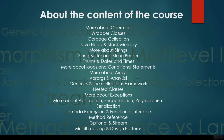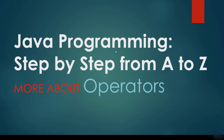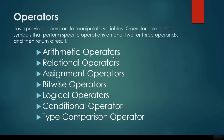Thanks for joining my course, let's get started. In this chapter we are going to talk about operators. Java provides operators to manipulate variables. Operators are special symbols that perform specific operations on one, two, or more operands and then return a result.